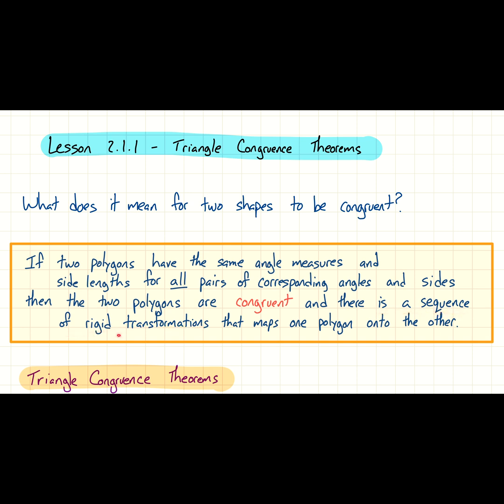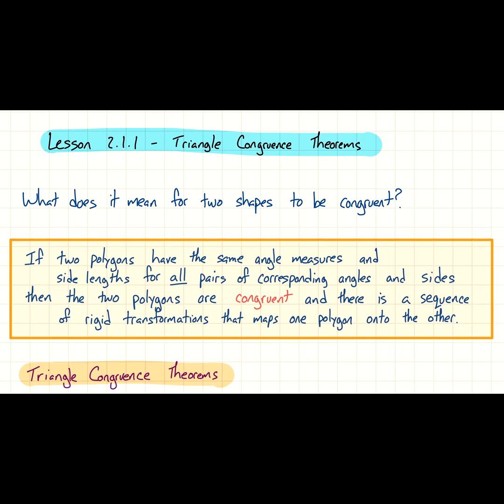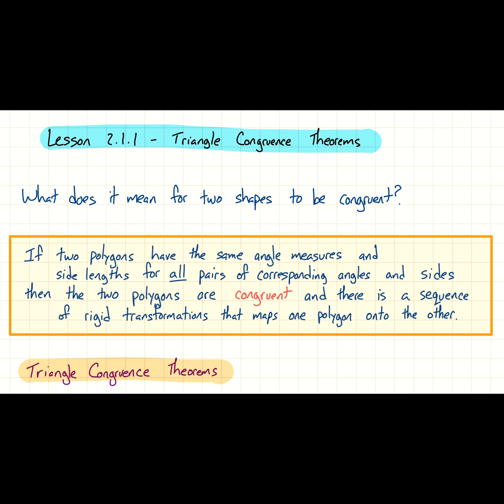Which also means that there is a sequence of rigid transformations - transformations. So rigid transformations being a translation, a rotation, reflection. So if you could do a transformation that'll map one polygon onto the other, they should fit perfectly. All right, so that's kind of more formal definition that you should probably know, and then hopefully we could try to simplify that moving forward.